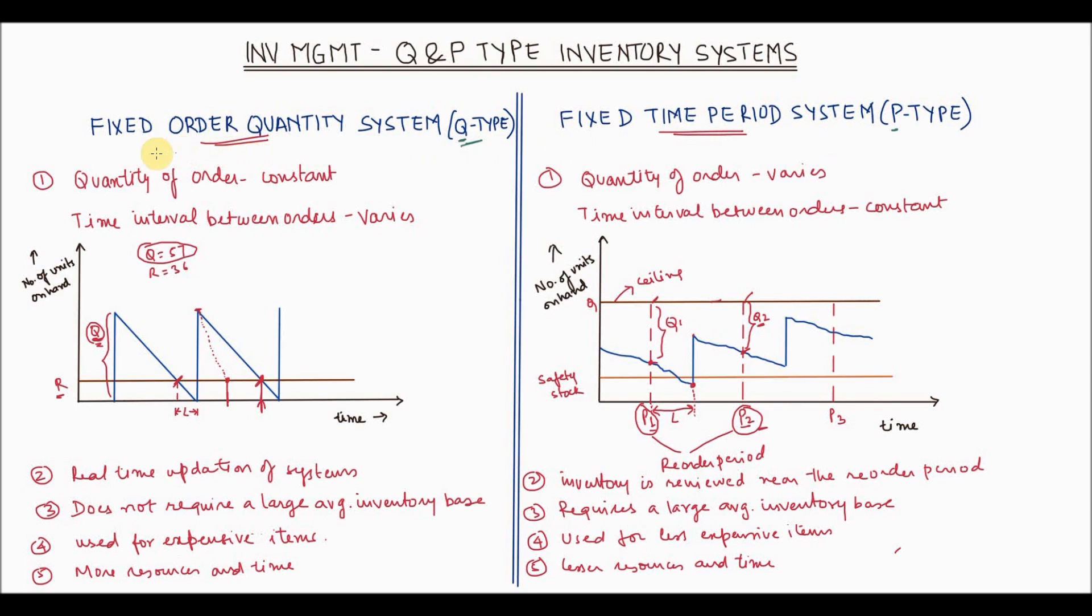Now the fixed order quantity system is the system where the quantity of order is constant and the time interval between the orders varies. Whereas in fixed time period system, the quantity of order varies while the time interval between the orders is constant. So this is the difference in these two systems.